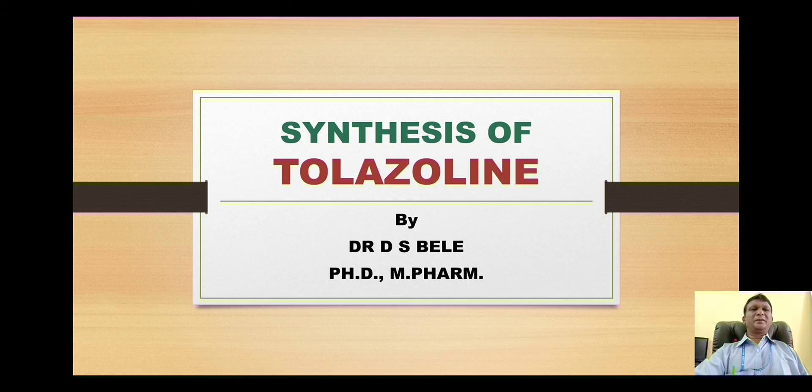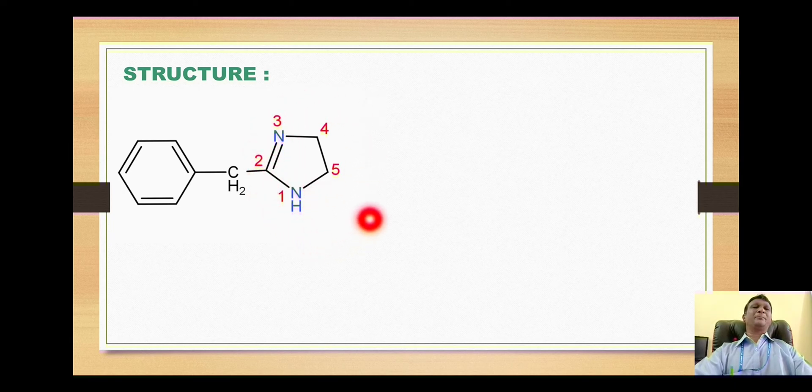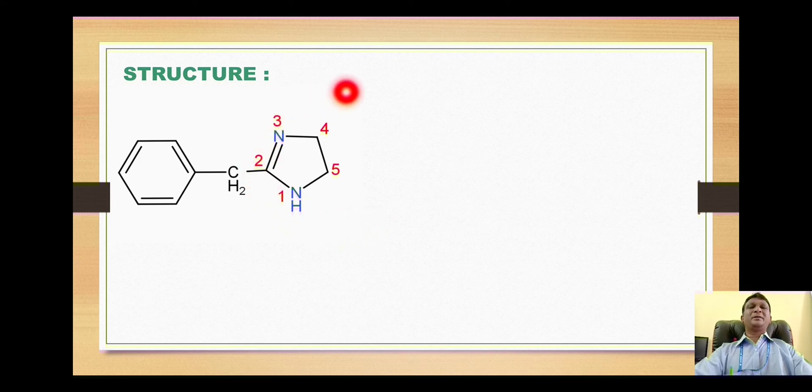Hello dear students, our today's topic is synthesis of tolazoline. Let's look at the structure of this compound. From the word tolazoline, you can guess the structural features present here. Tola stands for presence of this toluene-like structure, and zoline stands for presence of a nitrogen-containing five-membered ring system.